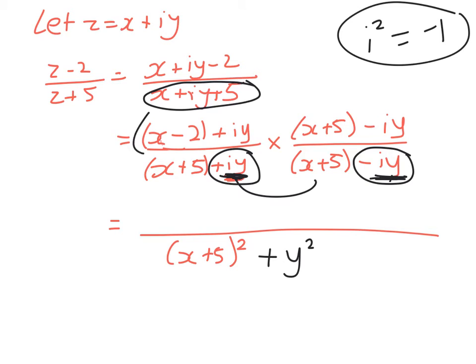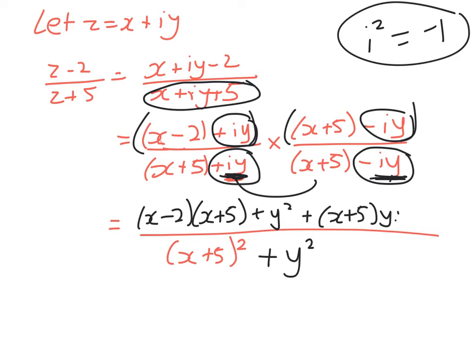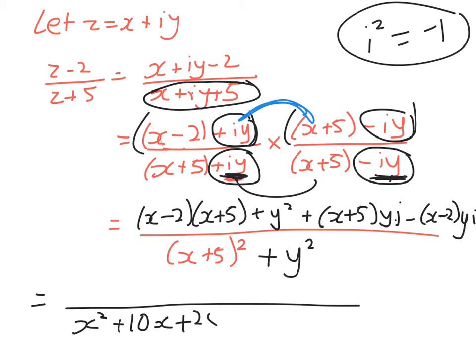Now let's expand out the top line. We could pop some brackets in here. So we'll go x minus 2 times x plus 5, plus y squared, plus x plus 5 yi minus x minus 2 yi. We can expand the bottom line, so we might as well do that: x squared plus 10x plus 25. Now it turns out we actually don't need to worry about this, but we'll do it anyway.